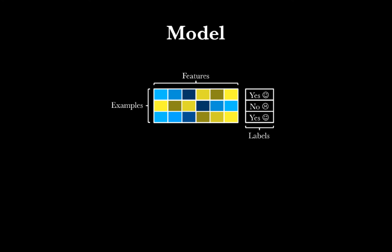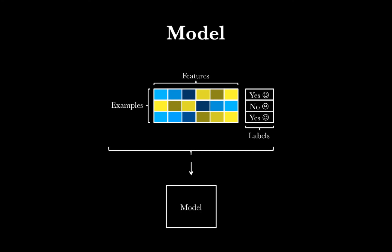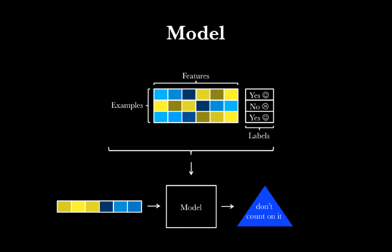When we're talking about machine learning, we're talking about building a model. This model will be built with an algorithm that combines the examples, features, and labels to make predictions about new examples. If we have this black box that is our model, we'd like to take a new example — a gene that doesn't have any label — feed that into the model, and get a prediction out. For example, 'don't count on it' — the model doesn't think this gene is likely to be involved in long-term memory. We call this final output a prediction from the model.